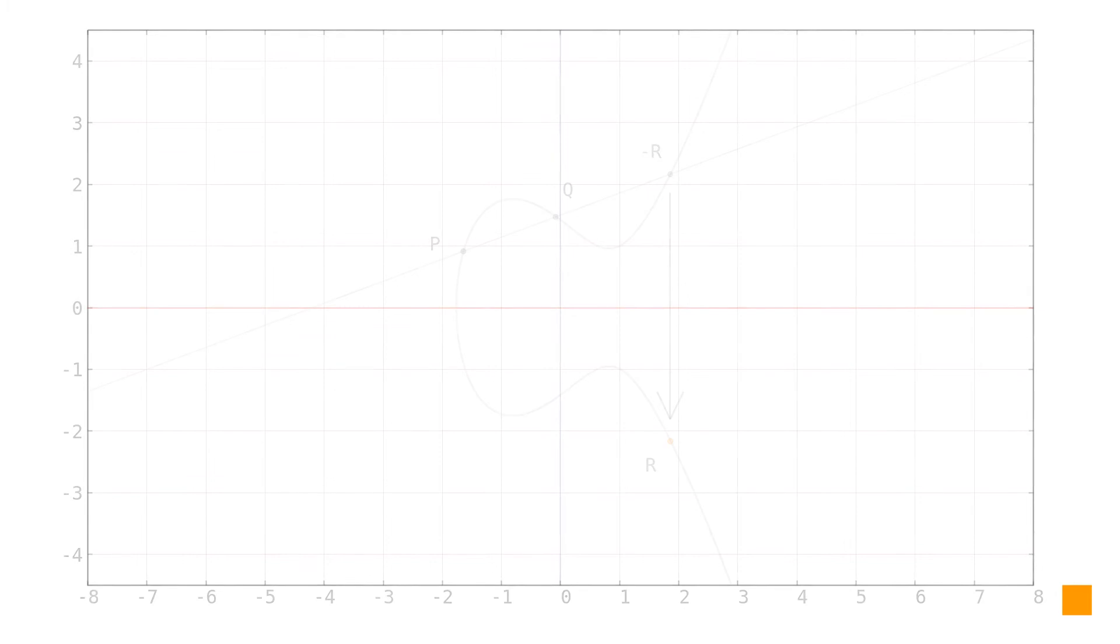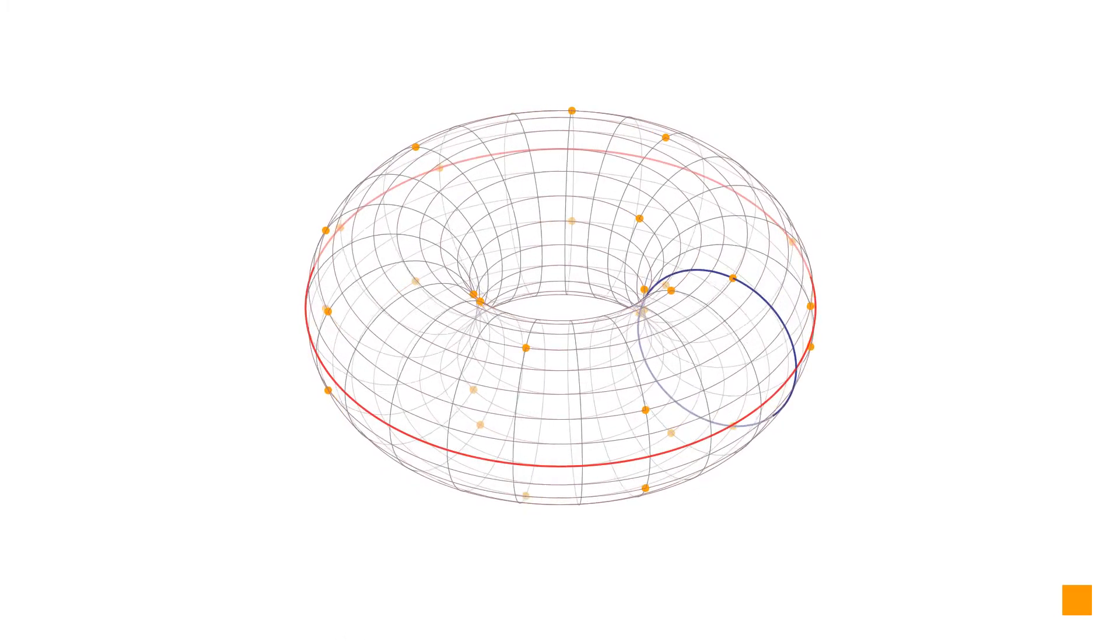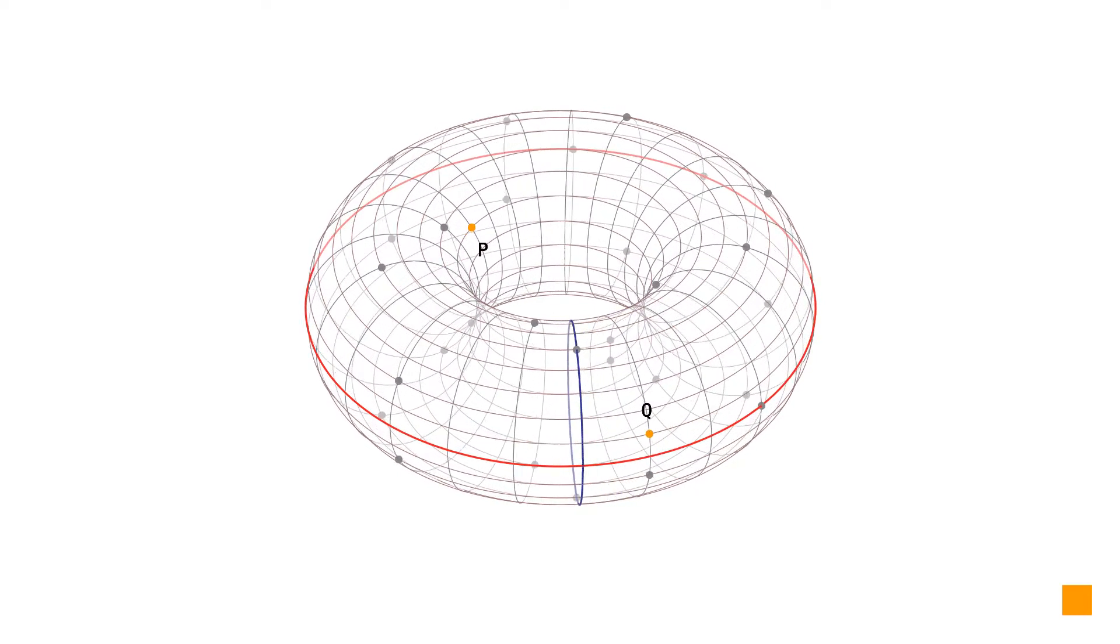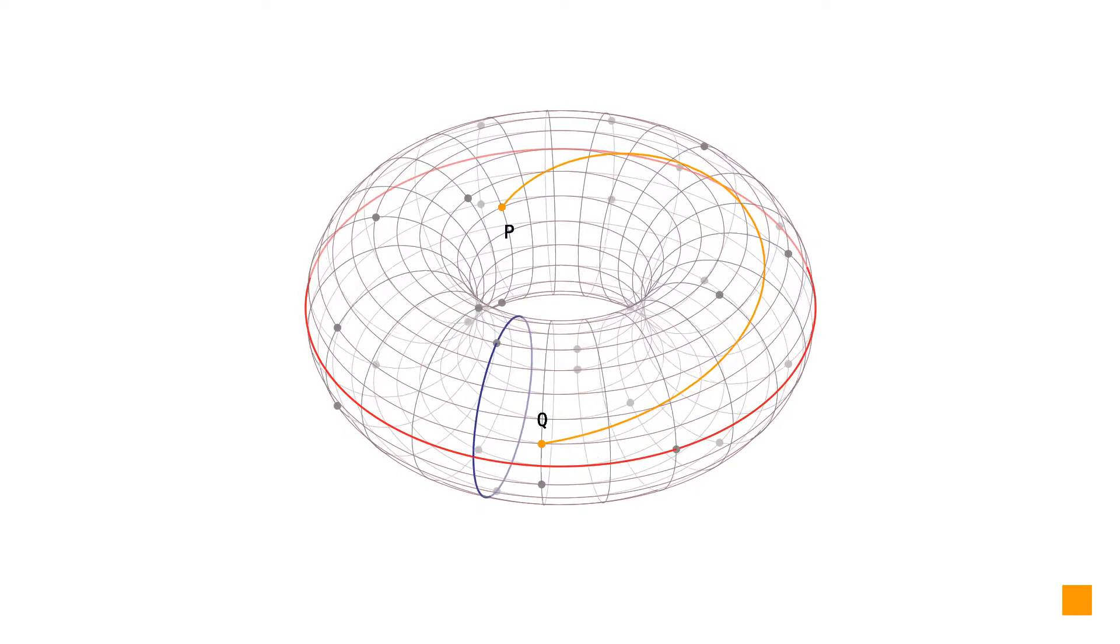The operation is similar on elliptic curve over a finite field. Any pair of points p and q from the set of rational points of the elliptic curve over a finite field can be connected with a straight line as well.